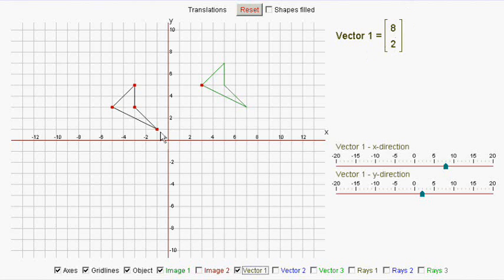The eight, the top number, means the distance across to the right, and it's eight squares. So here is the across direction, and it's eight squares to the right. And here is the up direction, and it's two squares up, and that goes on the bottom position.